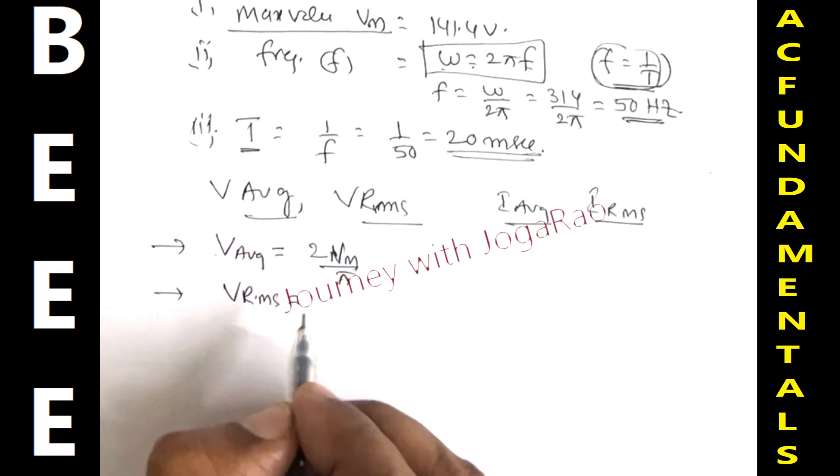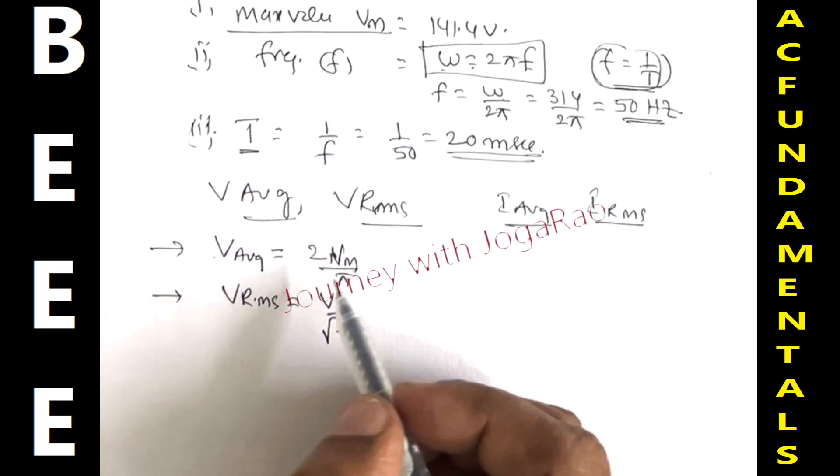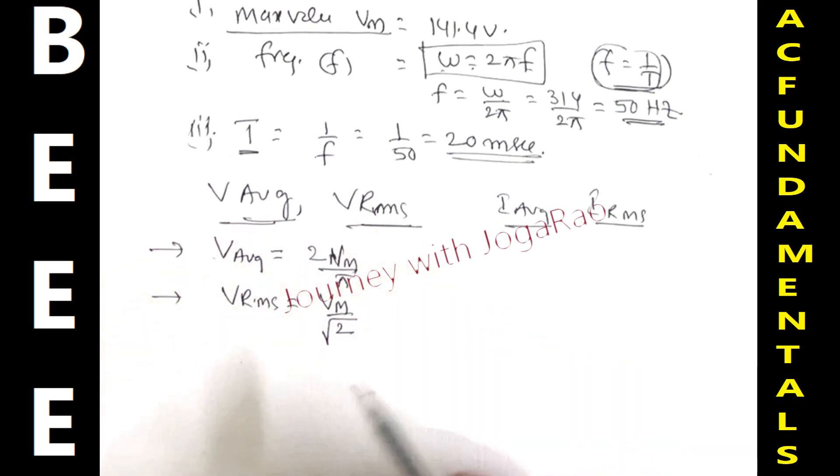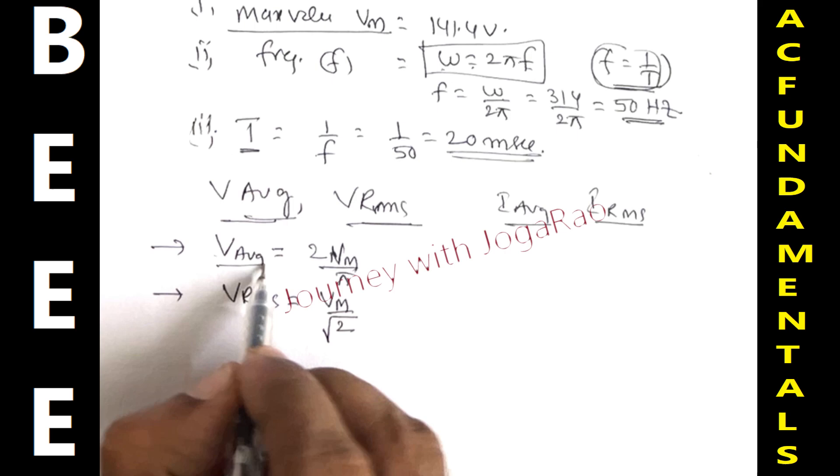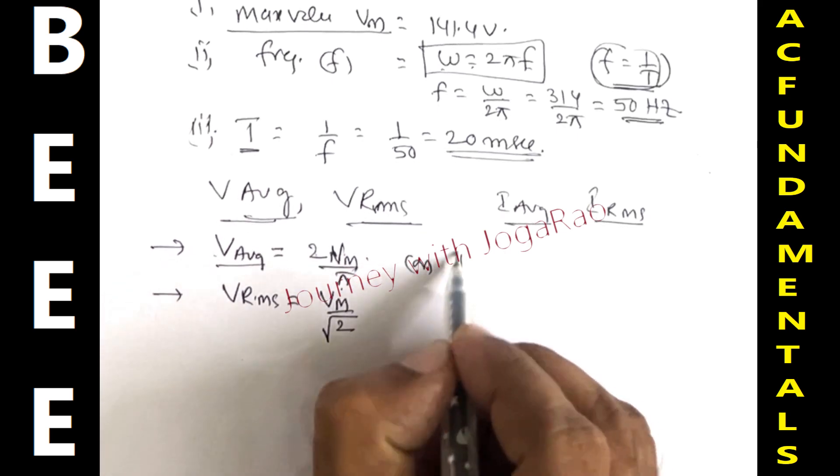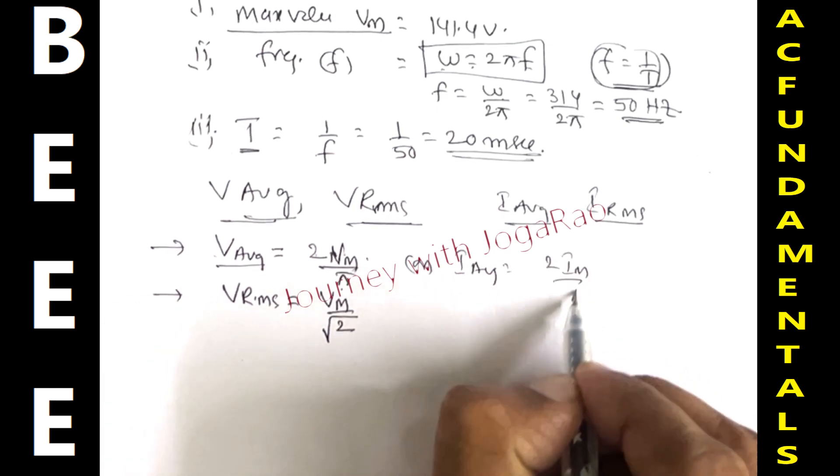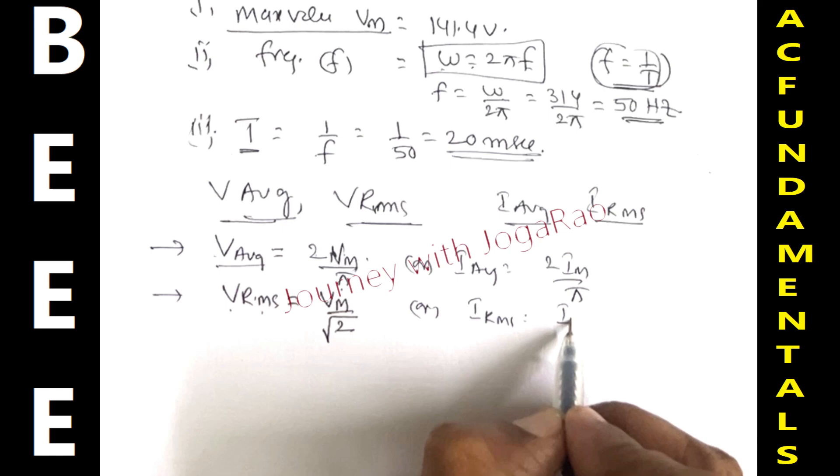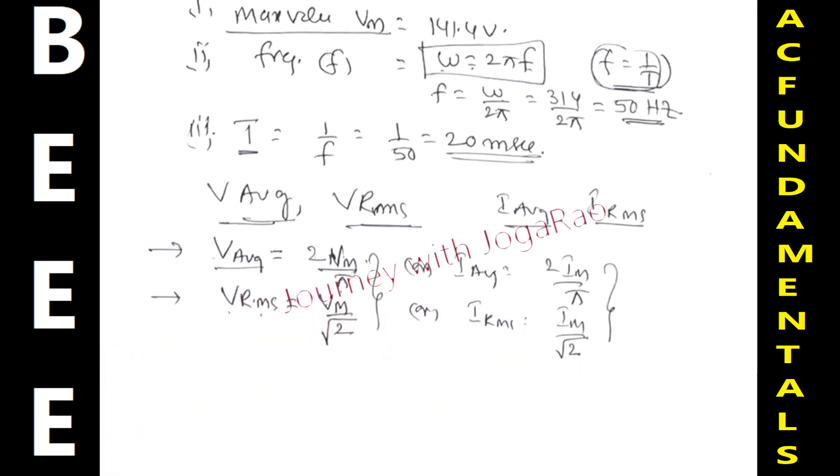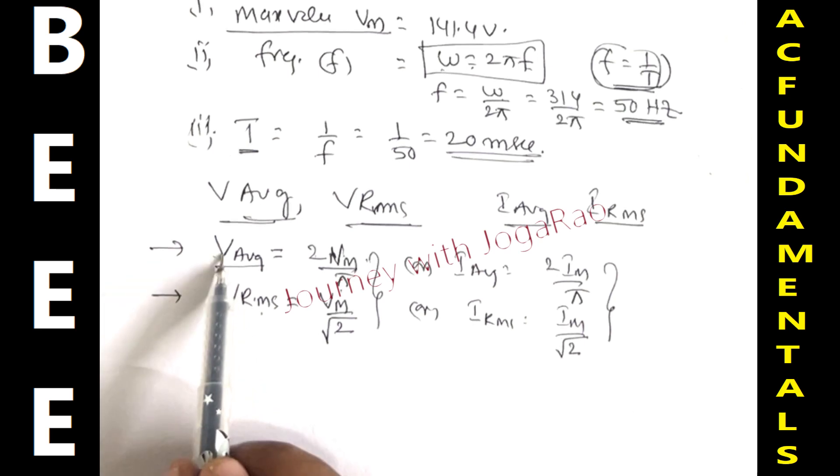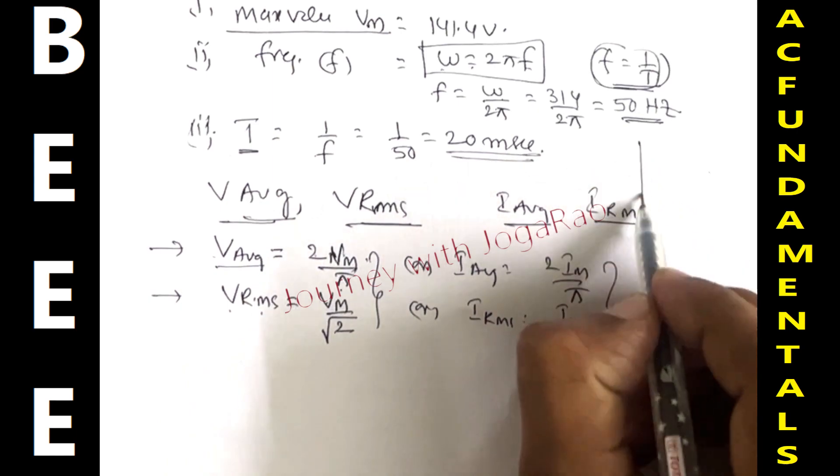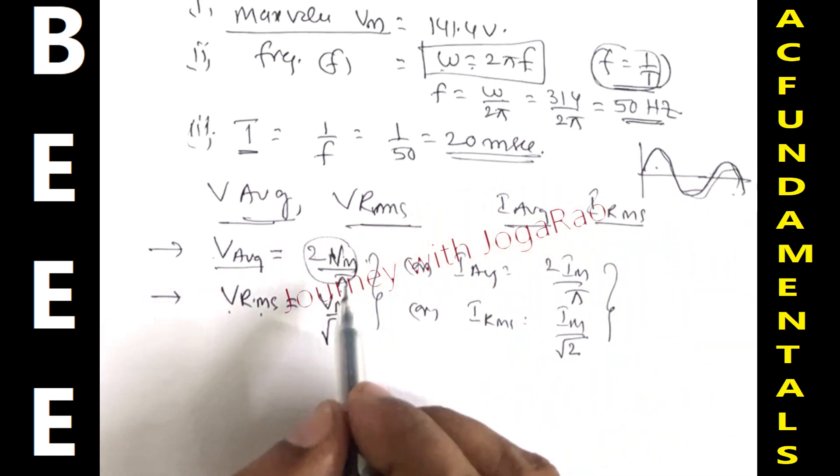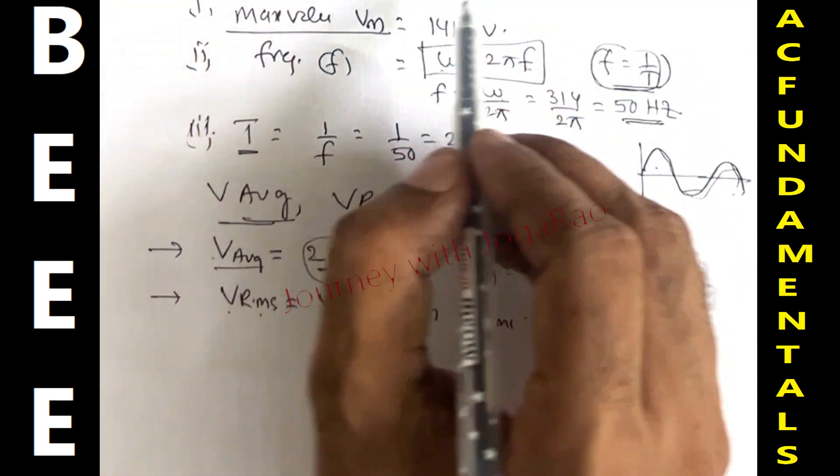And similarly, V RMS is equal to Vm by root 2. For sinusoidal waveform, voltage and current have the same nature. Current formulas: I average equals 2 Im by pi, and I RMS equals Im by root 2, because the derivations show that sinusoidal waveform has this nature.